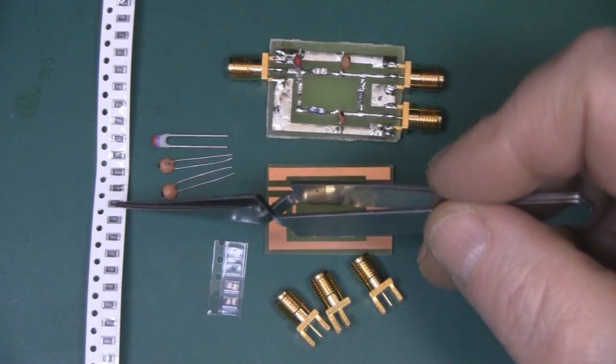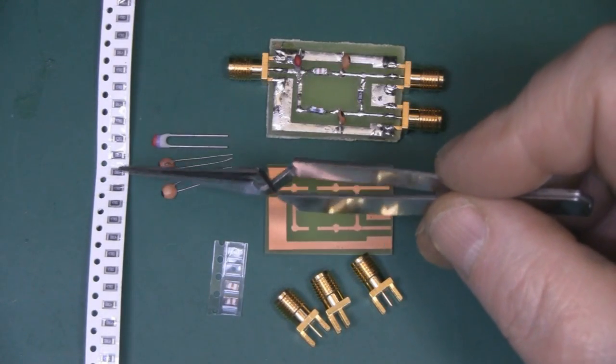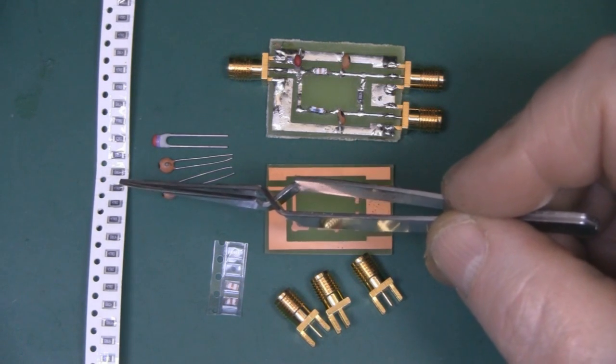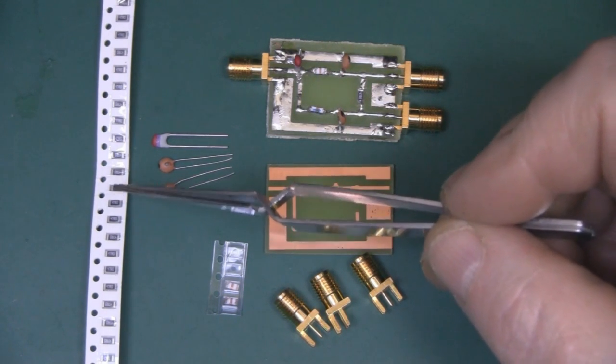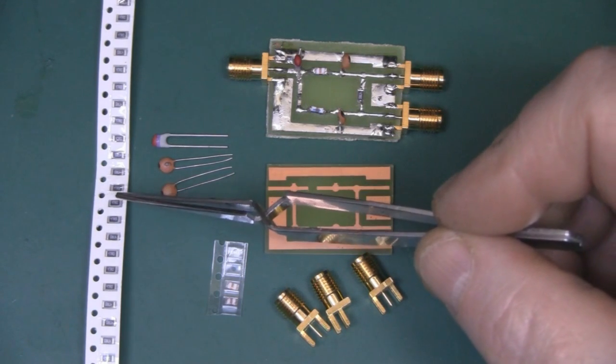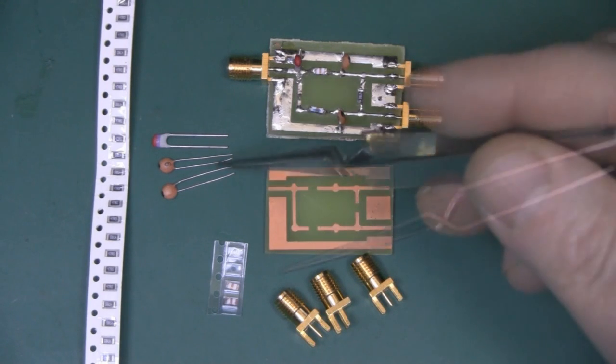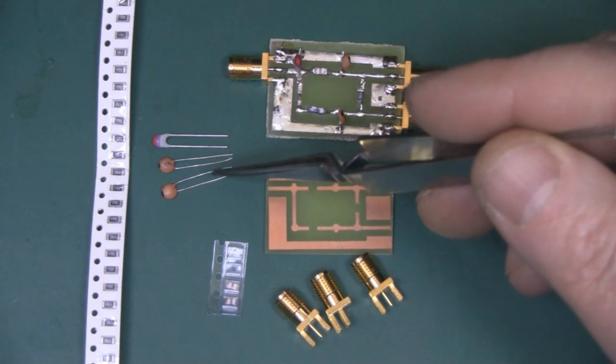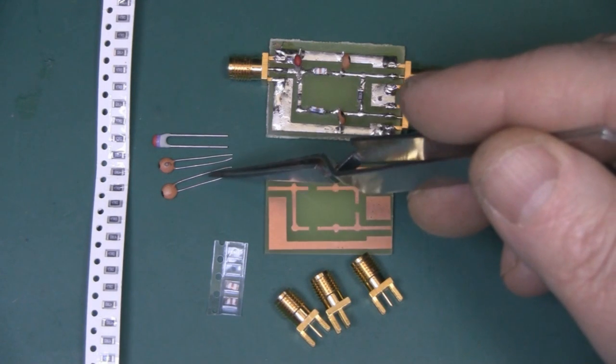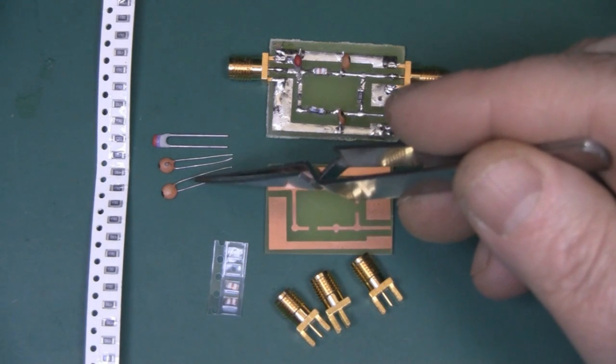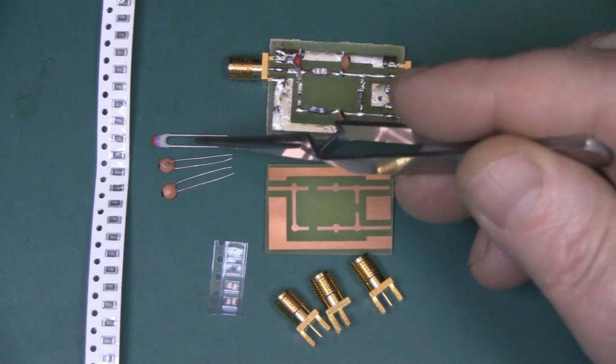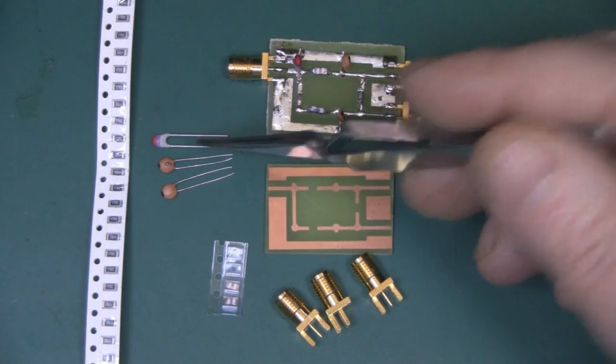Here on the far left I've got a strip of surface mount resistors. These are 47 ohm resistors and we need a 50 ohm resistor, but these have a tolerance of plus or minus five so they should be fine. Here I've got three capacitors. We need two capacitors that are 9 pf and one capacitor that's 18 pf.